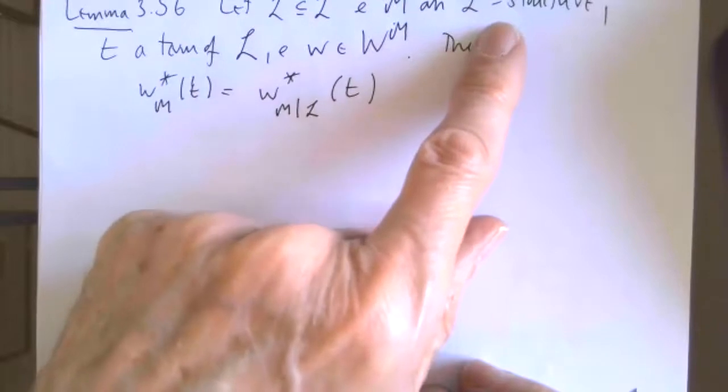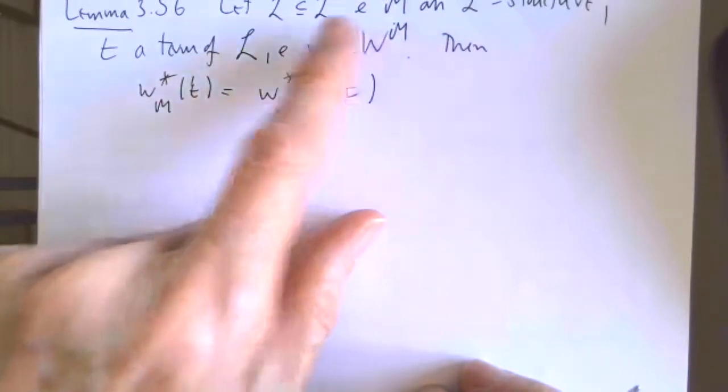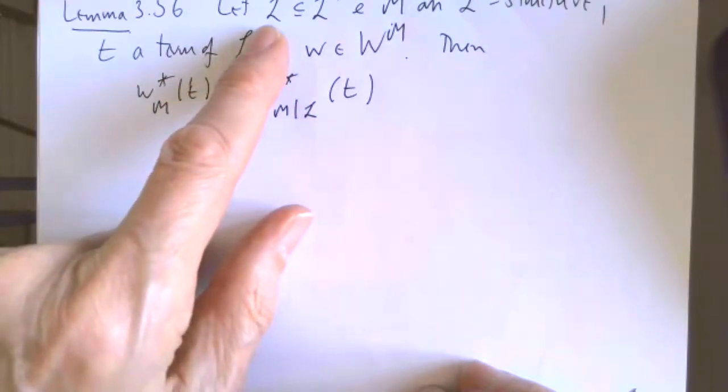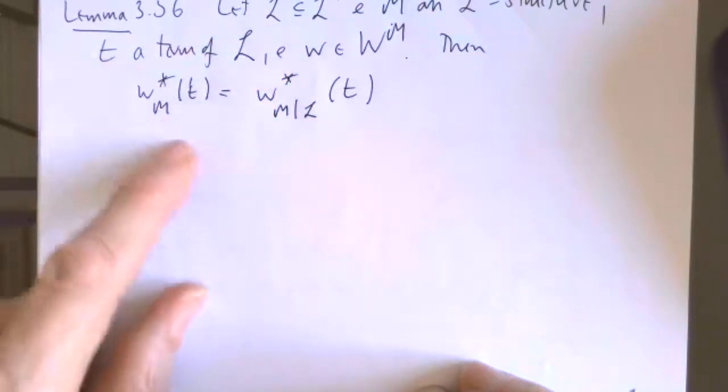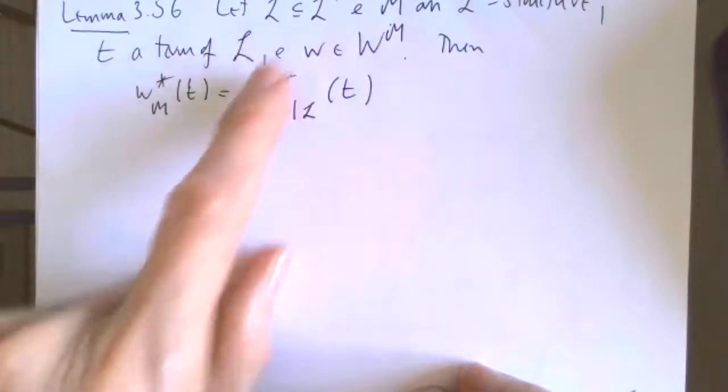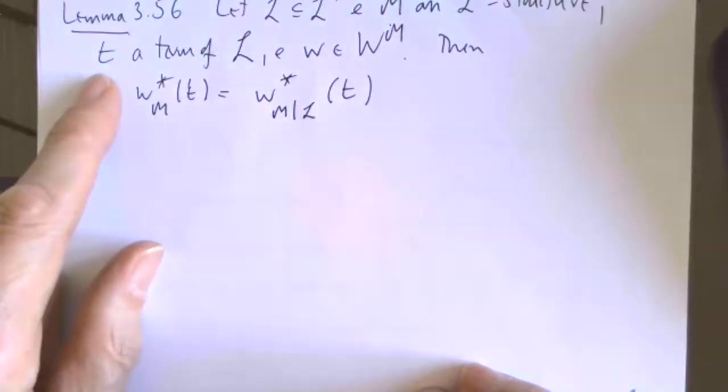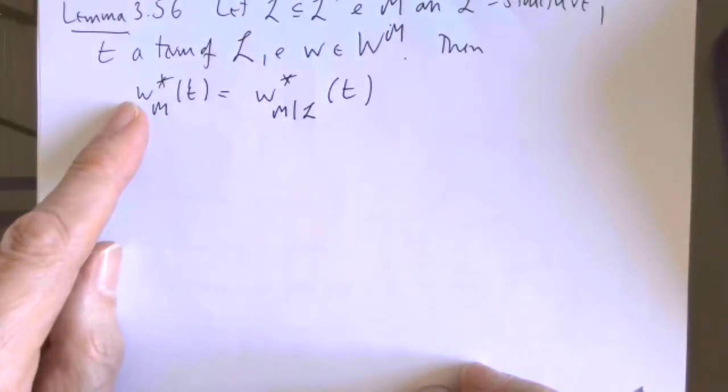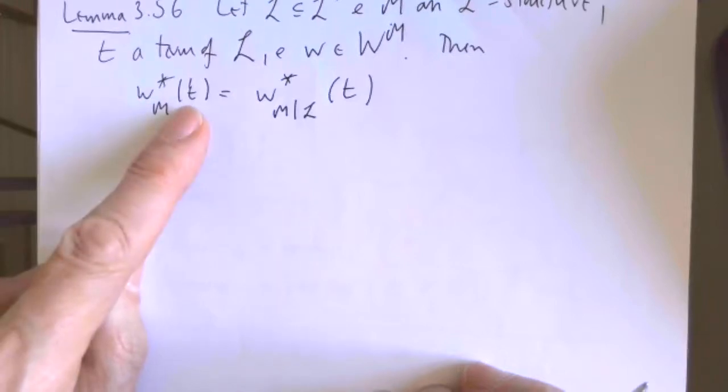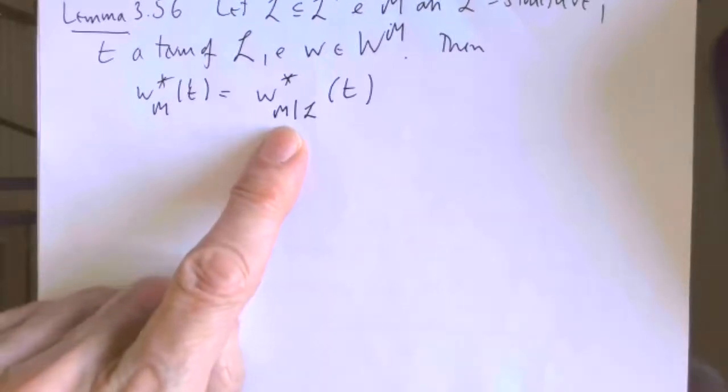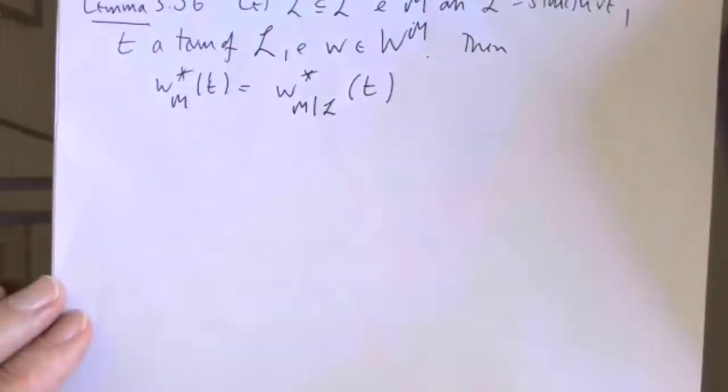This is the valuation of the term in the structure M. Now M has some extra things inside it compared to the reduct of M restricted to L. But the t doesn't mention any of these things. t is a term of L, not L prime. So it's not going to make any difference how we interpret this t, whether we think of it eventually in M or in the reduct, M restricted to L.